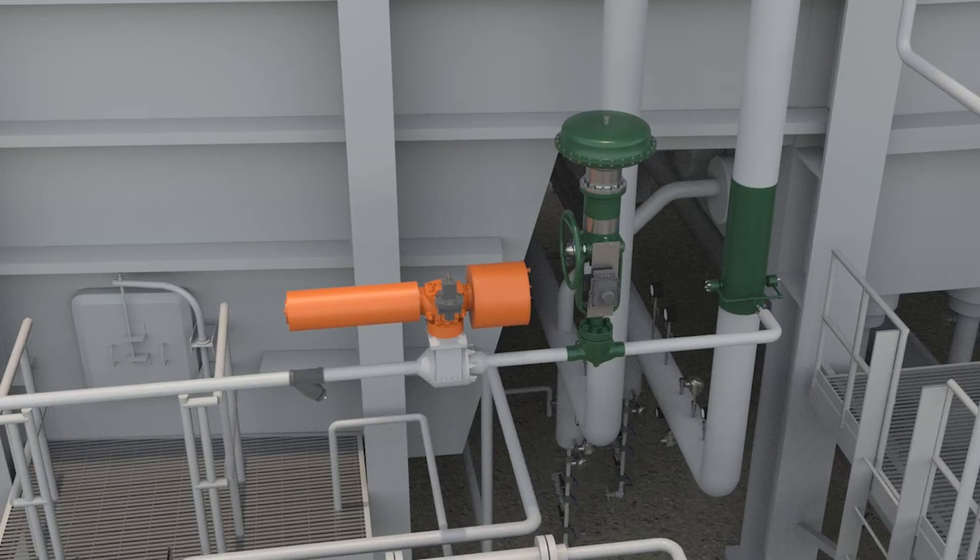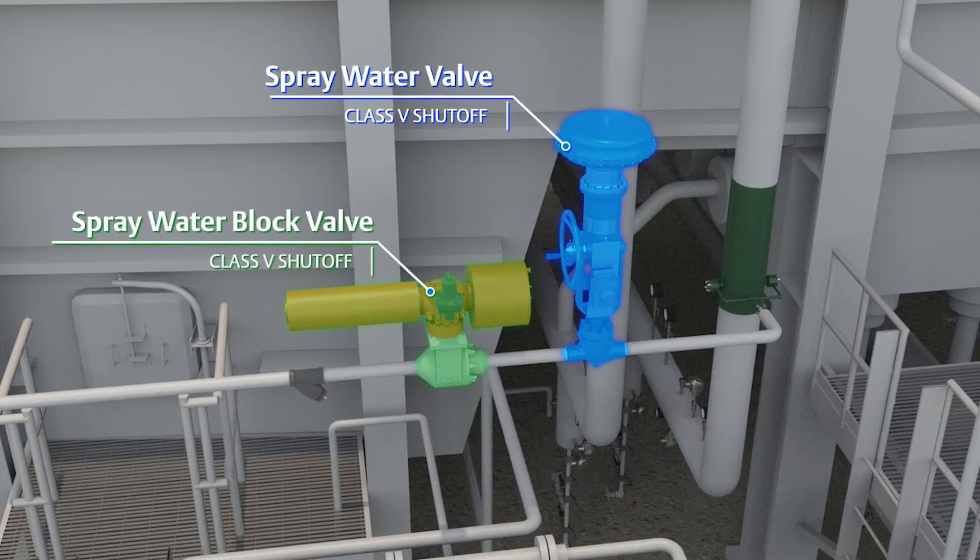It is important that the spray water and block valve shut off tightly, so that water does not leak into the steam line when it is not required, causing potential damage from thermal shock or efficiency losses from operating below steam temperature set point.